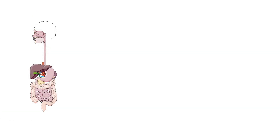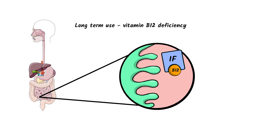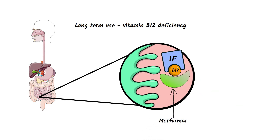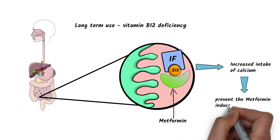Long-term use of metformin can cause vitamin B12 deficiency. Metformin interferes with the calcium-dependent absorption of the vitamin B12 intrinsic factor complex in the terminal ileum, and vitamin B12 deficiency can occur after many years of metformin use. Periodic screening for vitamin B12 deficiency should be considered, especially in patients with peripheral neuropathy or macrocytic anemia. Increased intake of calcium may prevent metformin-induced vitamin B12 malabsorption.